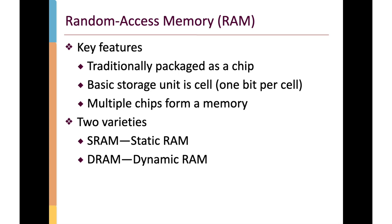This is the memory that you normally associate with the chips on your motherboard. It's also the kind of storage used inside the processor for things like the register file and cache memories. RAM is normally packaged as a chip, and if you've installed or upgraded memory, you've handled the little integrated circuit chips that make up the memory. The basic storage unit is referred to as a cell, which is basically just enough memory to store a single bit, and multiple chips are used to build up a whole memory system.